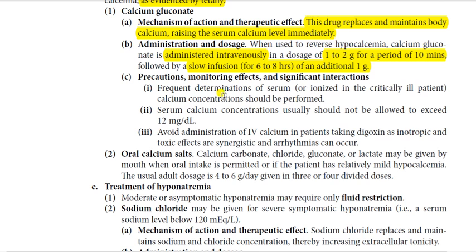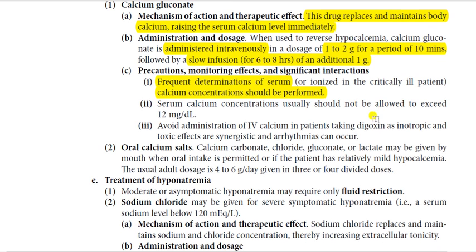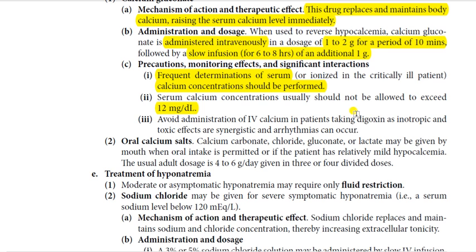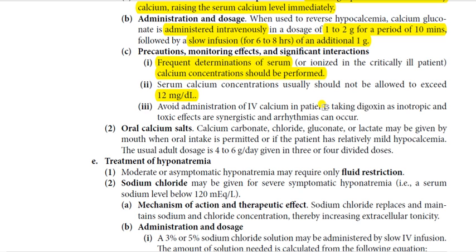Precautions, monitoring effects, and significant interactions for calcium gluconate: frequent determination of serum — especially ionized — calcium concentration should be performed in critically ill patients. Check calcium as a free ionized form, not as a salt. Serum calcium concentration should not be allowed to exceed 12 mg/dL. Therefore, monitor serum calcium levels at least twice daily — morning and evening.